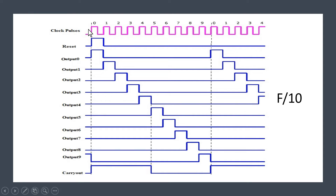I have drawn the waveform of all the signals including the clock signal, reset signal, and all the output signals. When reset is high, output 0 is high and all other signals are 0. In the second clock cycle, output 1 goes high and all other output signals are 0, and so on. In the tenth clock cycle, output 9 is high and all other output signals are 0. In the eleventh clock cycle, output 0 goes high again. Now, if you pay attention to all the output signals, they are all clock signals.